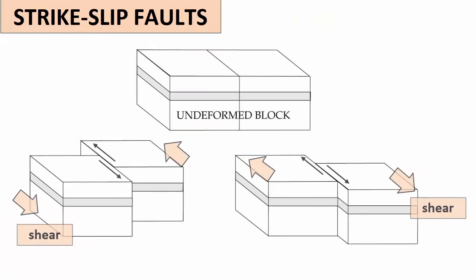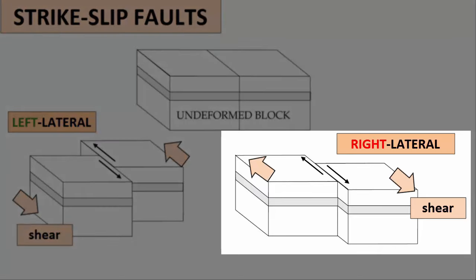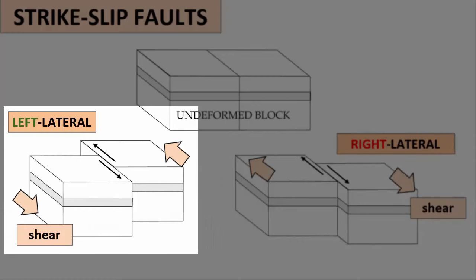Now let's return to strike-slip faults. Strike-slip faults can be further subclassified into right-lateral and left-lateral. Along a right-lateral strike-slip fault, one side of the fault appears to have slipped right relative to the other. Along a left-lateral strike-slip fault, one side appears to have slipped left.